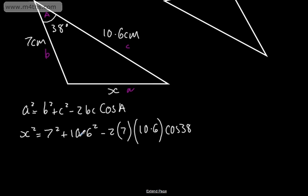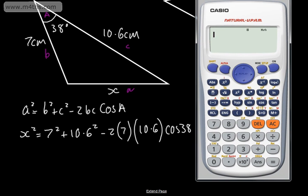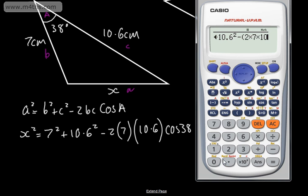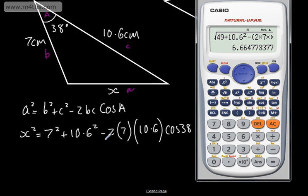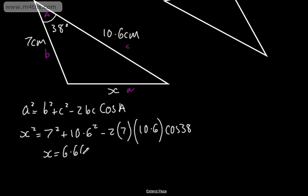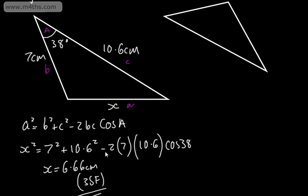As we saw with the sine rule, we can of course use radians as well as degrees. In a calculator, taking the square root: the square root of 7 squared — which is 49 — plus 10.6 squared, minus 2 times 7 times 10.6 times cosine of 38 degrees. This gives us the length X as 6.66. So X is equal to 6.66 centimeters, correct to three significant figures.